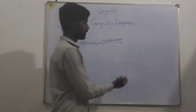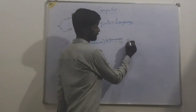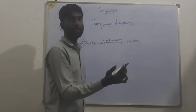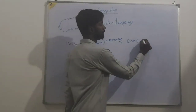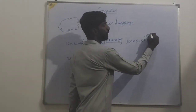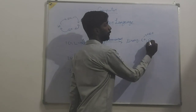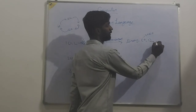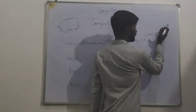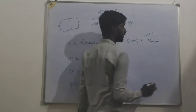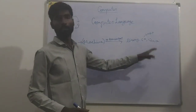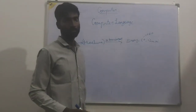What is that language? Binary. Binary means 0 and 1. Zero means off, one means on.